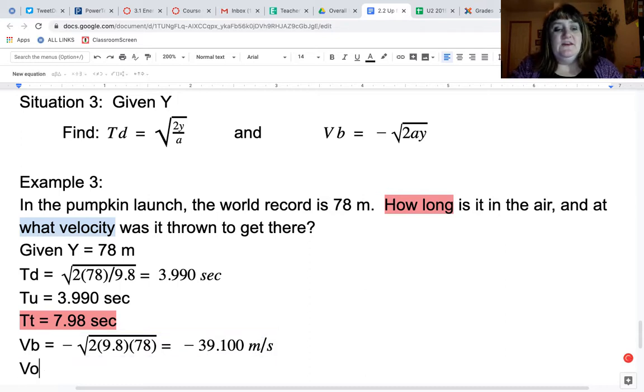That does mean that V naught would be the positive of that, which is 39.1 meters per second. So what velocity was it thrown at to get there? That would be that positive 39.1 meters per second. Hope these examples help you do your 2.2 problems. Thanks for watching.